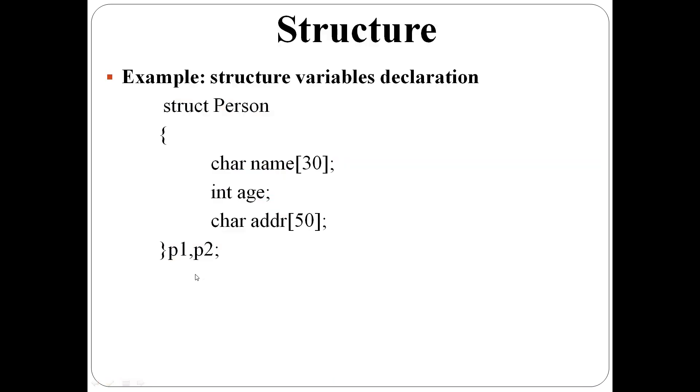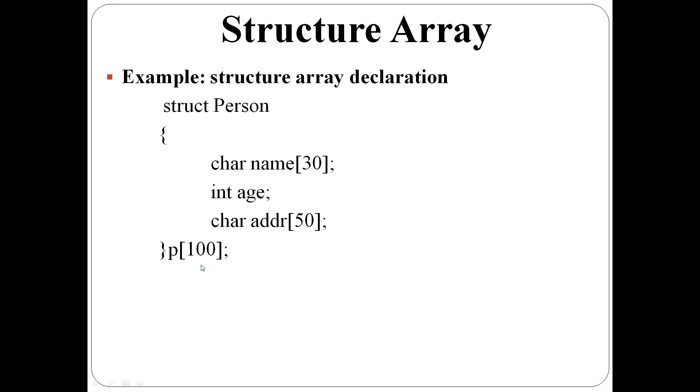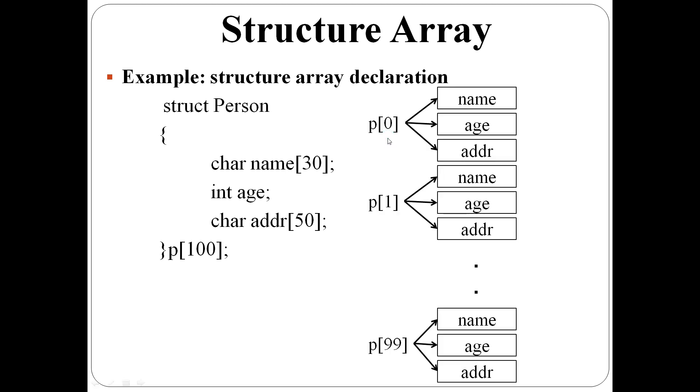If we need to keep 100 person's information, we can declare structure variables p1 and p2. But declaring p1, p2, up to p100, 100 variables is not practically possible. For that, we can declare a structure array p of 100. Here, p0 to p99, total 100 person's information can be kept. p of 0 has corresponding name, age, address. p of 1 has corresponding name, age, address. For each structure variable, 82 bytes are reserved.